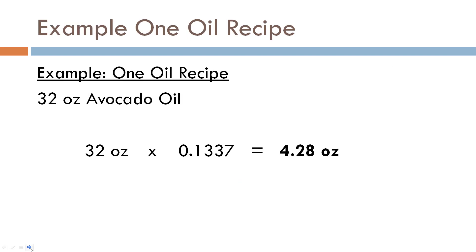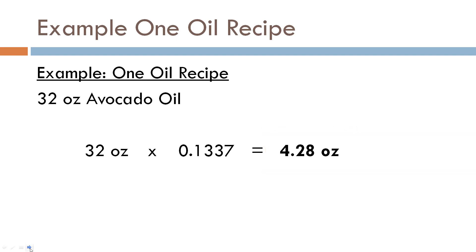So let's look at an example. I have a recipe with 32 ounces of avocado oil — a one-oil recipe, very simple. We're going to take 32 ounces, multiply that by the sap value for avocado oil, which is 0.1337, and that gives us 4.28 ounces. So we need 4.28 ounces of lye to saponify all 32 ounces of avocado oil.